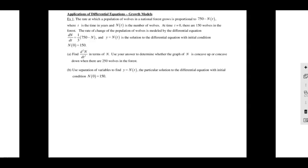The first example says the rate at which a population of wolves in the national forest grows is proportional to 750 minus n, where t is the time in years and n is the number of wolves. At time t equals zero, there are 150 wolves in the forest. The rate of change of the population of wolves is modeled by this differential equation — it started with a verbal description but then just gave us the differential equation and the initial condition.